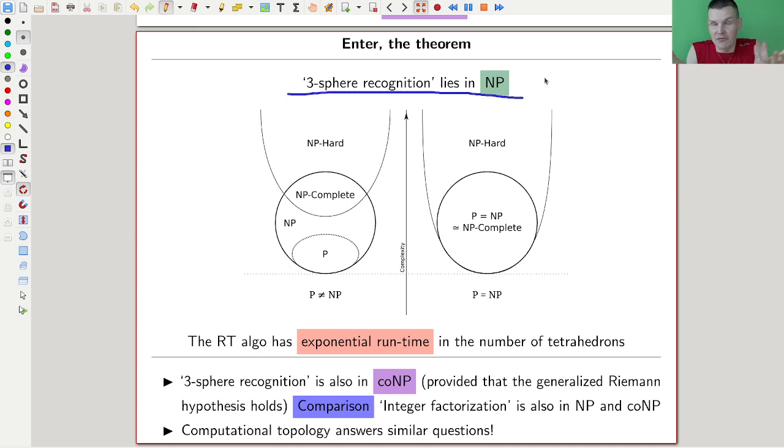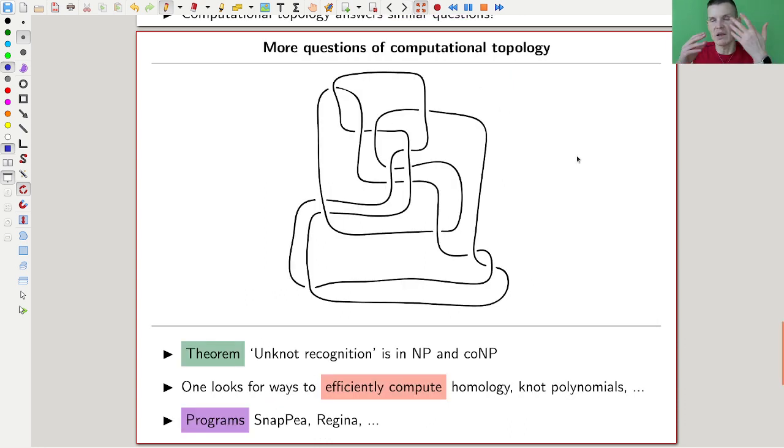Computational topology essentially gives you answers to those types of questions and gives you an indication why certain questions in topology are difficult and others are not. The three-sphere recognition is just my blueprint example of something you would study in computational topology.